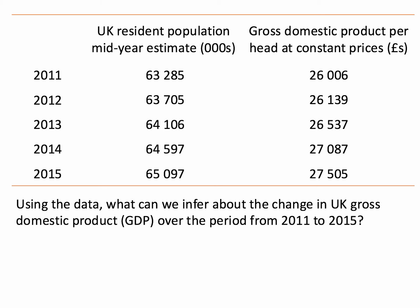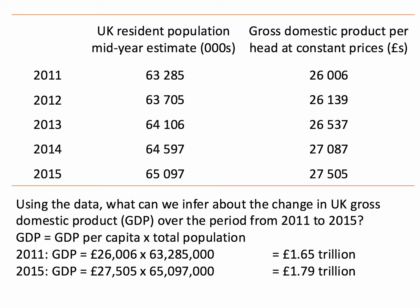And here's the simple question: using the data, what can we infer about the change in UK GDP over the period from 2011 to 2015? You'll have to get your calculator out for this one. GDP of course is GDP per capita multiplied by the total population. So if we take 2011, that would be £26,006 multiplied by the population of 63.285 million.